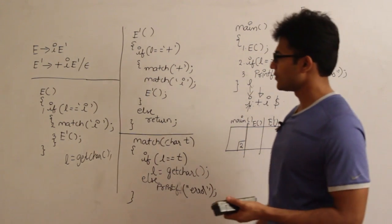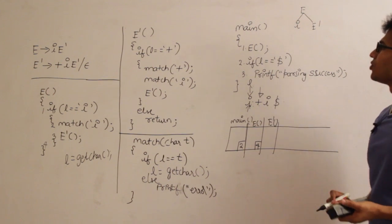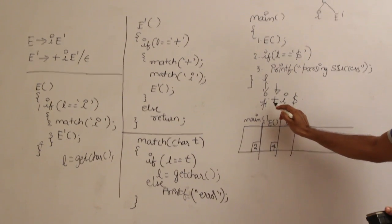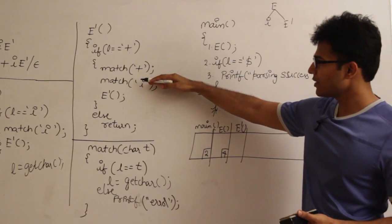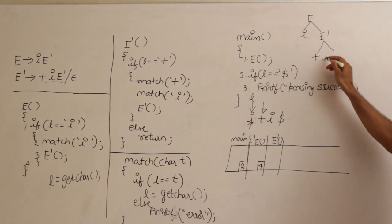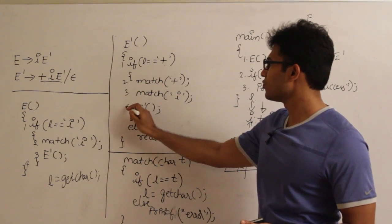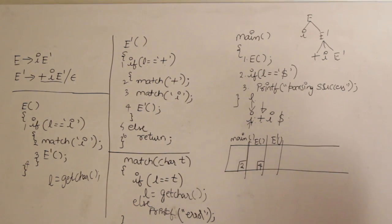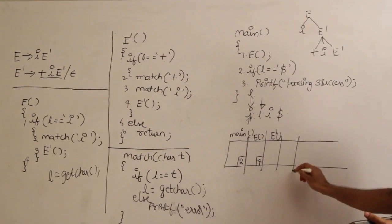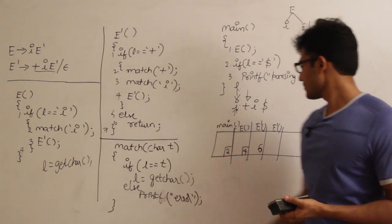After E dash returns, we come to the next line in E and it is all over. In function E dash, we check if L equals plus. Yes, lookahead is plus, so we match plus, then match I, then call E dash again — expanding E dash to plus I E dash. Plus and I have been matched, and now we are calling E dash recursively.